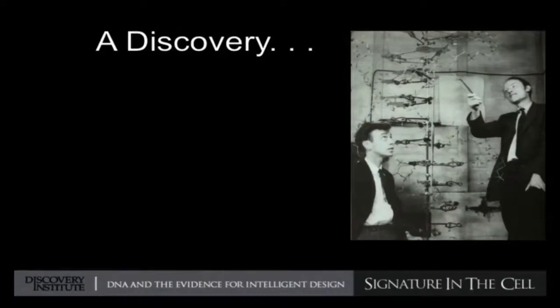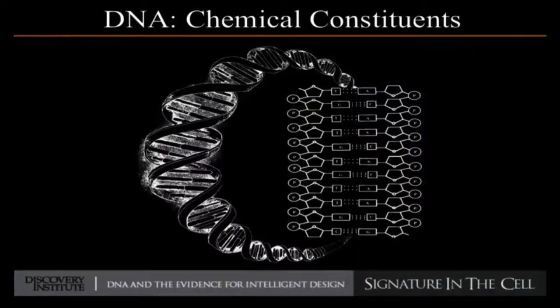Watson and Crick made a discovery in 1953 that is well known to almost all of us — the elucidation of the structure of the DNA molecule. They were first able to determine that DNA had this beautiful double helix structure, and that shook the scientific world. There were parallel discoveries going on in the field of protein chemistry, and side by side, science was making progress on understanding the inner workings of life in even the simplest living cell. We see here the chemical structure of DNA that Watson and Crick were able to discover.